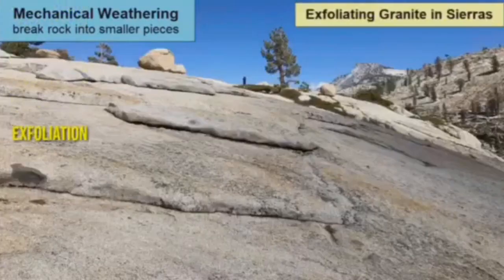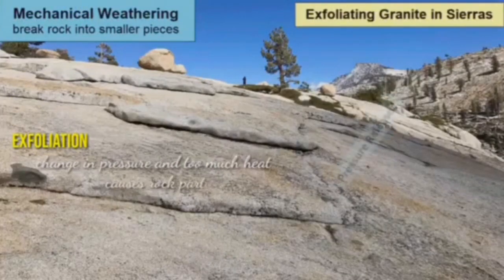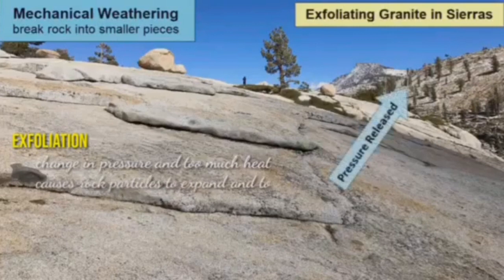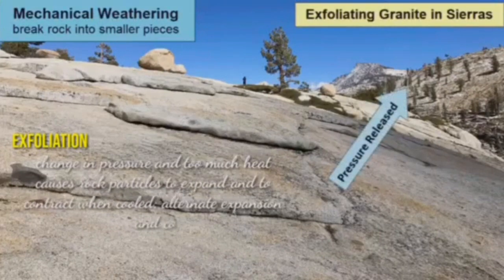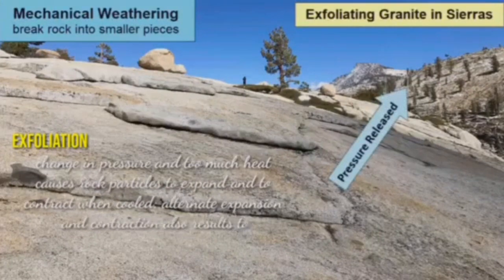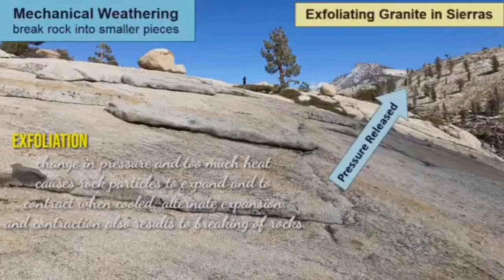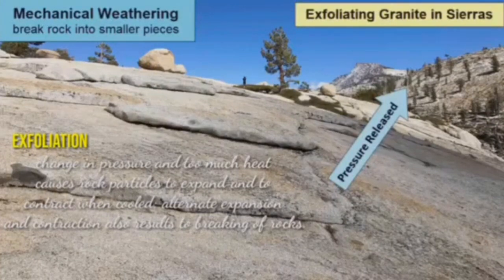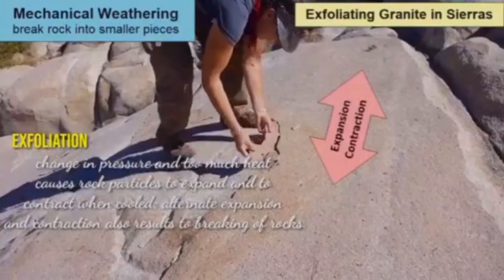Exfoliation is a process where changes in pressure and heat cause rock particles to expand and contract. Alternate expansion and contraction also result in the breaking of rocks.